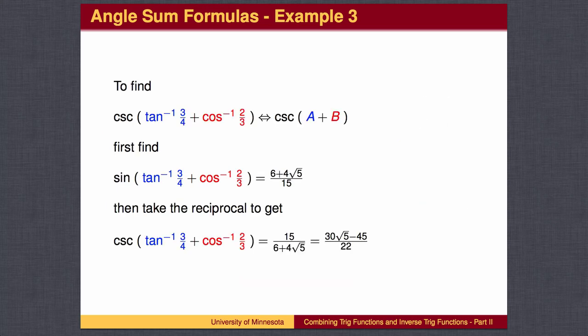Here is a third example. In this problem, we are asked to find the cosecant of angle plus angle. We don't have a cosecant formula, but we do know the cosecant is the reciprocal of the sine, so we first find the sine value, which was the first example, and then take the reciprocal to get the final answer.